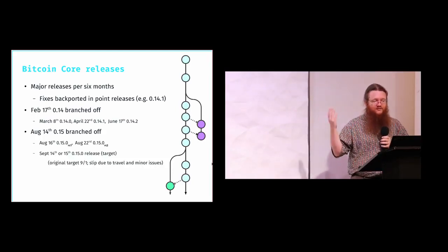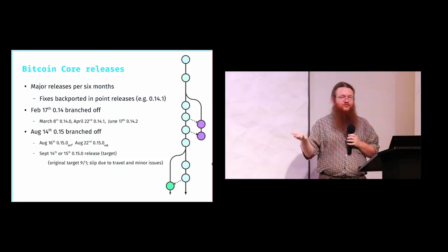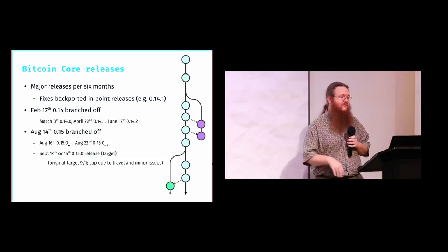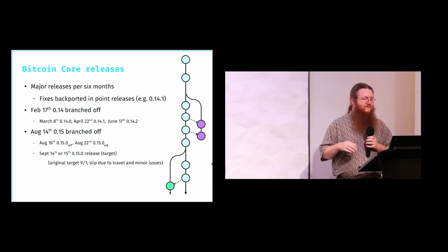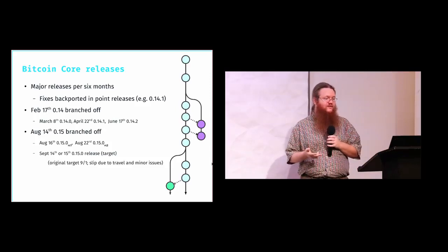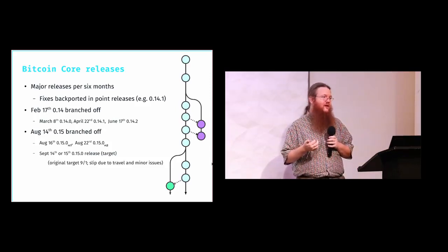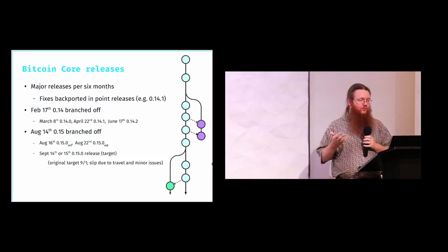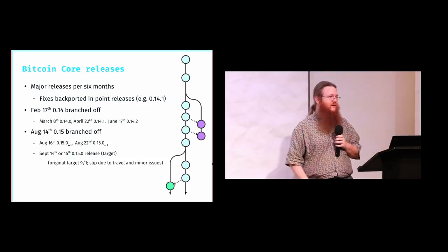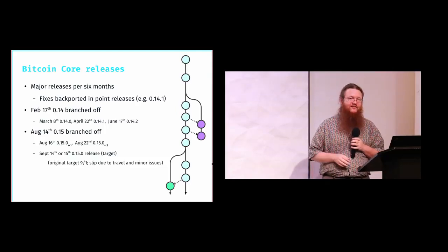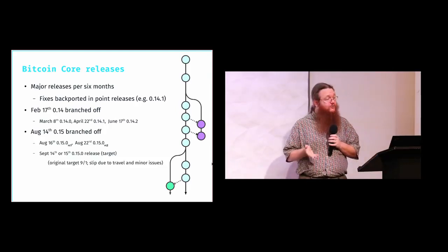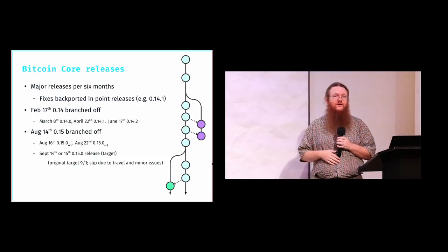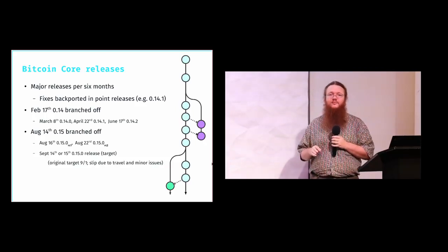Back in February this year, 0.14 branched off, and in March 0.14.0 was released. There have been a couple of point updates fixing bugs. Then in August, 0.15 branched off, and we've had two release candidates — really, there's a third. The binary should be up sometime tonight or tomorrow morning for the third release candidate. We're expecting the full release of 0.15 around the 14th or 15th. It's been delayed because developers were traveling and didn't have access to their cryptographic keys. Our original scheduled date was September 1st, so a two-week slip is unfortunate but not a big deal.